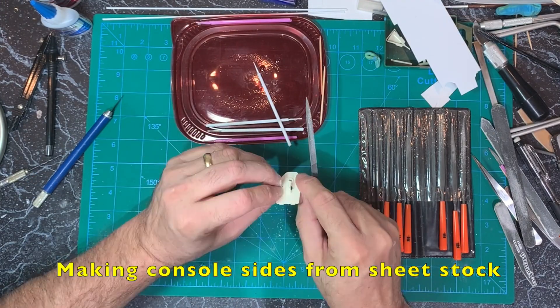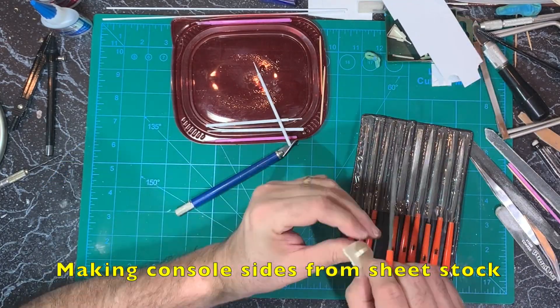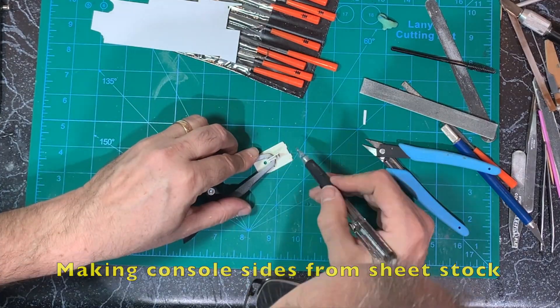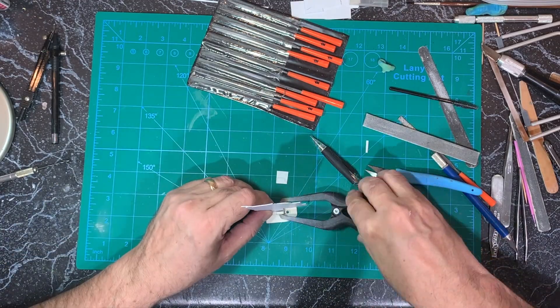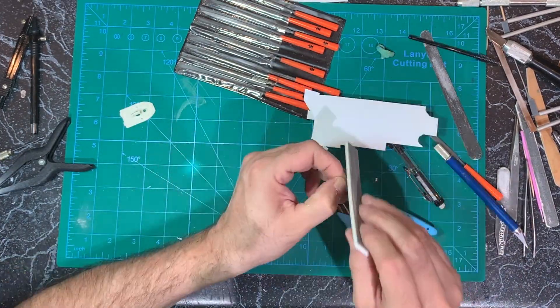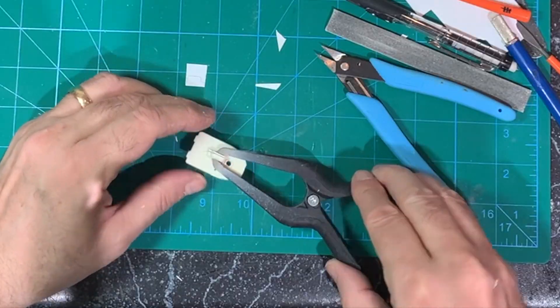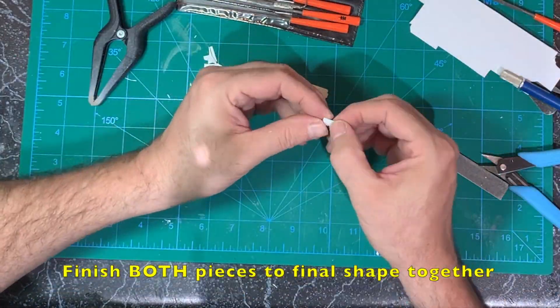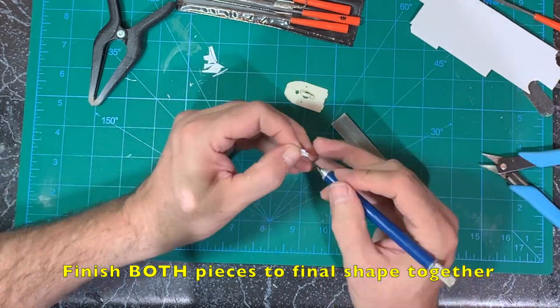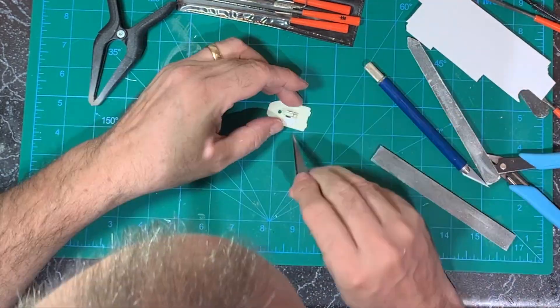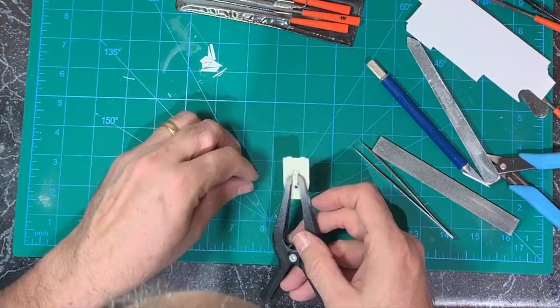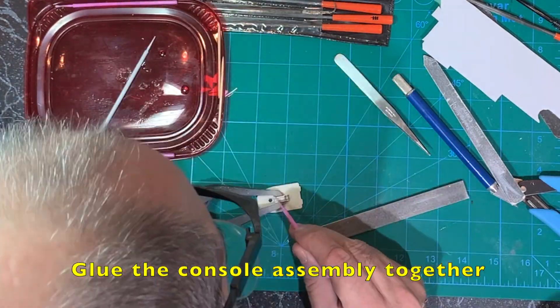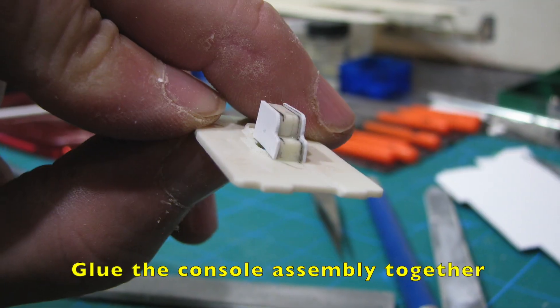So I sand and file the new center portion of the console to the correct dimensions. Then I prepare a piece of thin sheet styrene and trace the outline of the center console onto it. I repeat this procedure on the other side. Then I cut the first piece out and test fit it to the console. I repeat this procedure on the other side. Then I bring the two pieces together and sand, file, and trim them to have identical outlines. Then I test fit the three pieces together to make sure everything looks correct. Three pieces clamp together in the correct position. I dab a few drops of ultra thin super glue onto it.